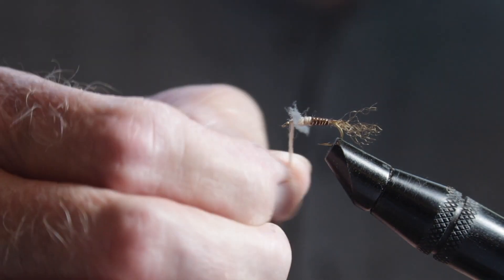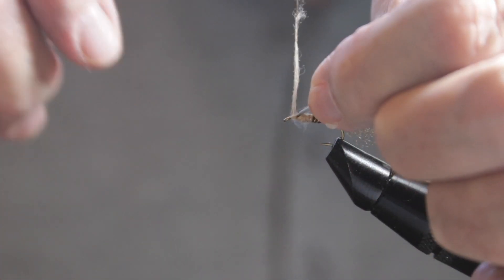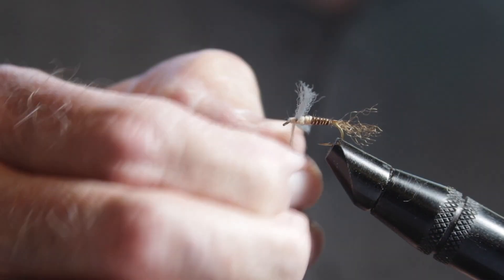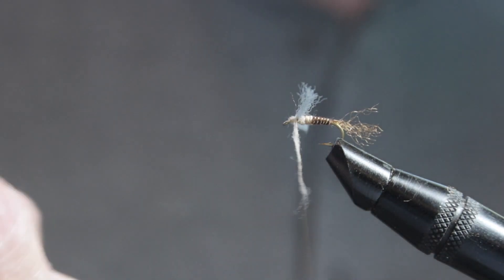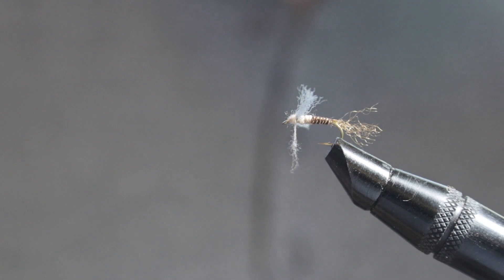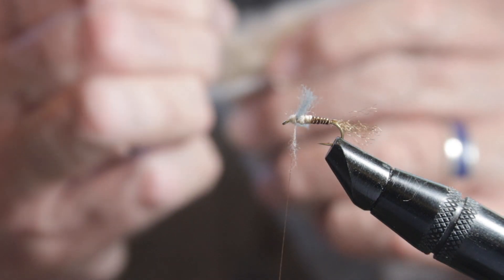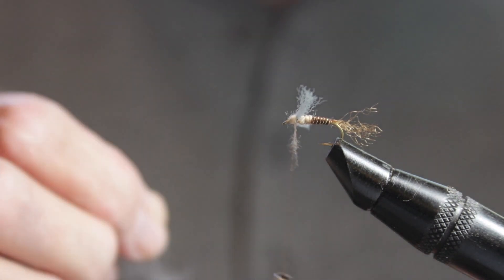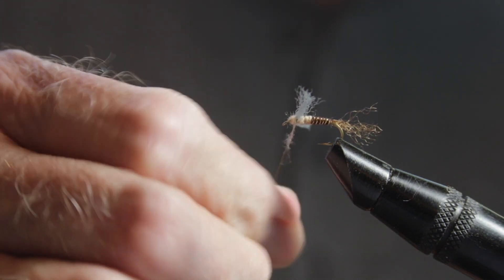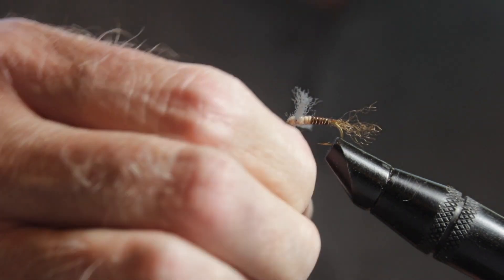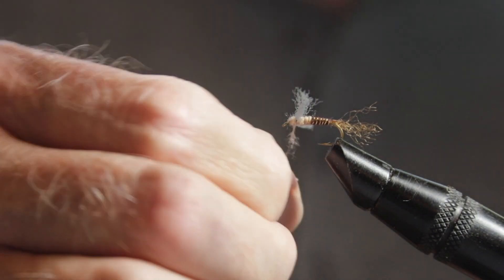There's no right or wrong way to do it. I mean, we're tying this in like a spent wing. And it mimics a fly that's hatched or tried to hatch and all of a sudden it's given up the ghost. It's lying on the surface of the water with its wings outstretched. And, well, dead. We'll finish the dubbing with some figure eight wraps.